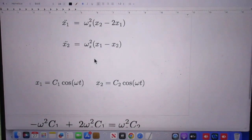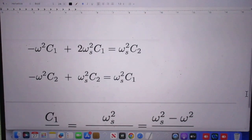So I now substitute in these equations, X1 and X2, the trial functions, and out pops two equations. You can easily check that, of course.